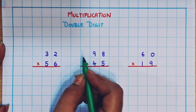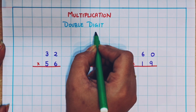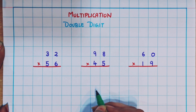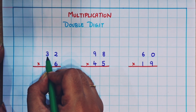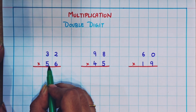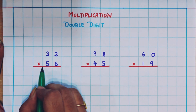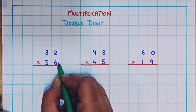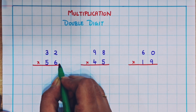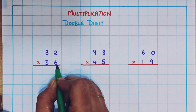Hi everyone, welcome back. Today we are going to learn the multiplication of double digit numbers. So let's begin. Here we have 32 into 56. First, what we are going to do is the multiplication of the number present in the ones place.